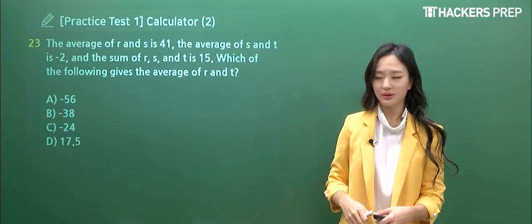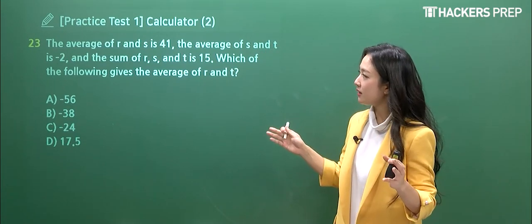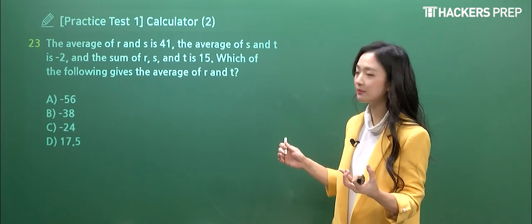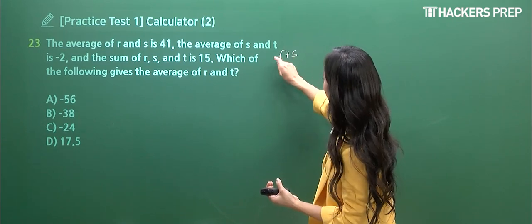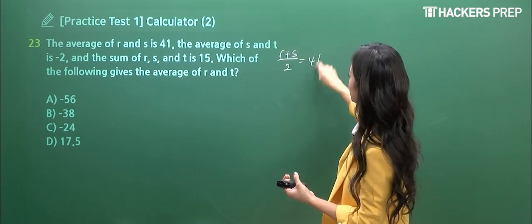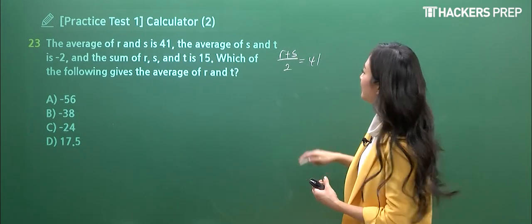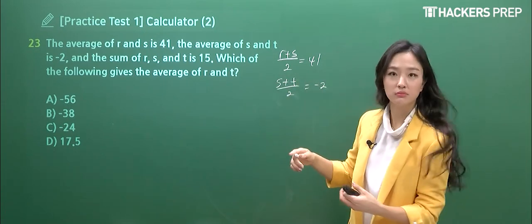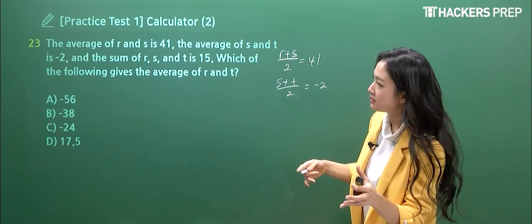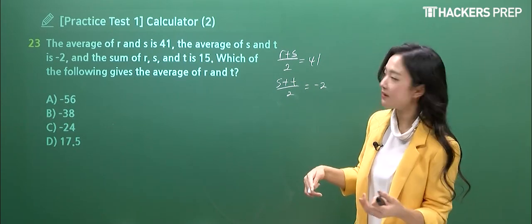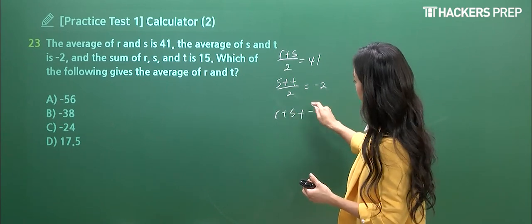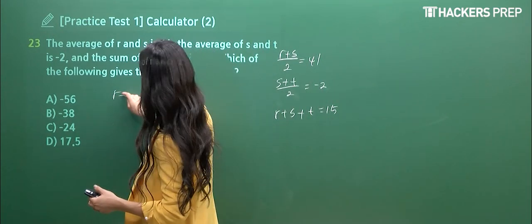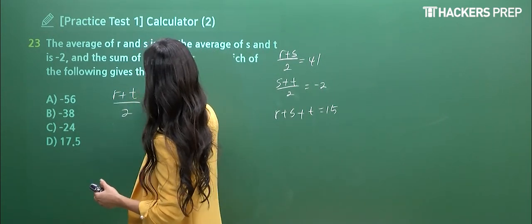So let's move on to question number 23. The average of R and S is 41. What's a synonym for average? It starts with an M, mean, right? So you have the average of R and S, the sum divided by the number of terms, equals to 41. And the average of S and T is equal to negative 2. That's how you approach this. And the simple sum, notice how it's not presenting the average, it's just the sum of R, S, and T is 15. Which of the following gives the average? What we're ultimately looking for is the average of these two numbers.